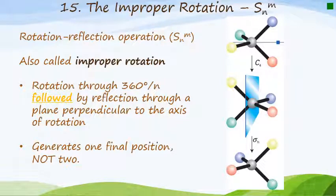Let's go on to the last symmetry operation: the improper rotation. An improper rotation is simply a rotation followed by a reflection. It has the symbol S, with the same subscript/superscript notation as a proper rotation C. The subscript describes the principal rotation and the superscript describes the number of times applied. It is a rotation through 360°/n, followed by reflection through a plane perpendicular to the axis of rotation, generating one final position.